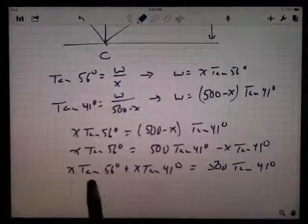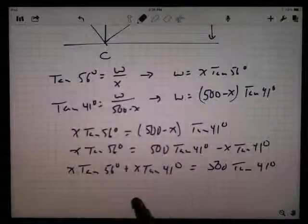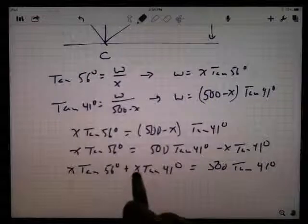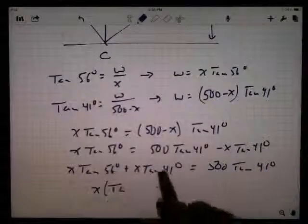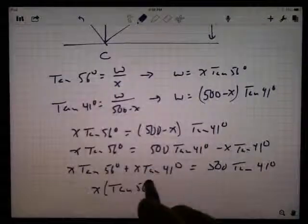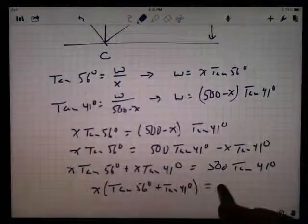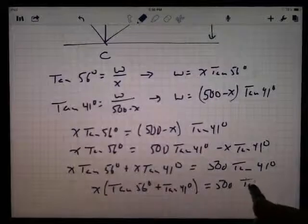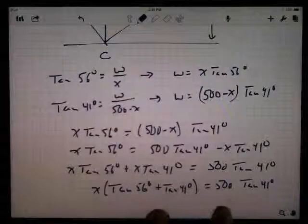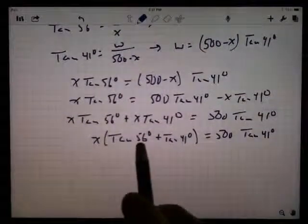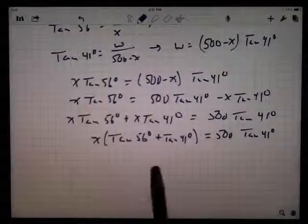Now, if this were just like three times X plus nine times X, I just add the three and the nine to get 12. Well, essentially that's what I'm doing here. I'm going to factor this X out so that those two numbers just get added together. Tangent of 56 degrees plus the tangent of 41 degrees. And that stuff's still the same over there. Notice that you can't just say tangent of 97 degrees. We don't even know how to deal with that number yet.